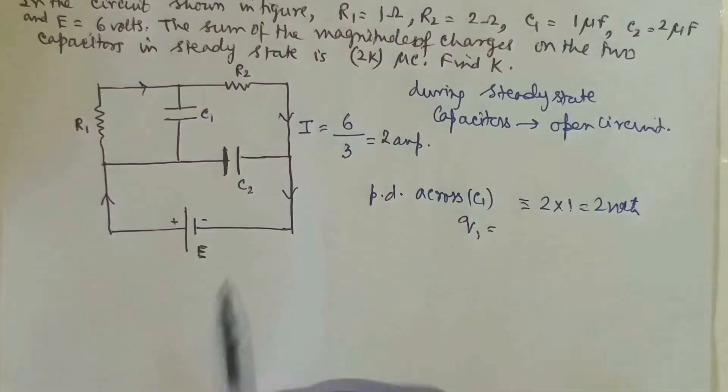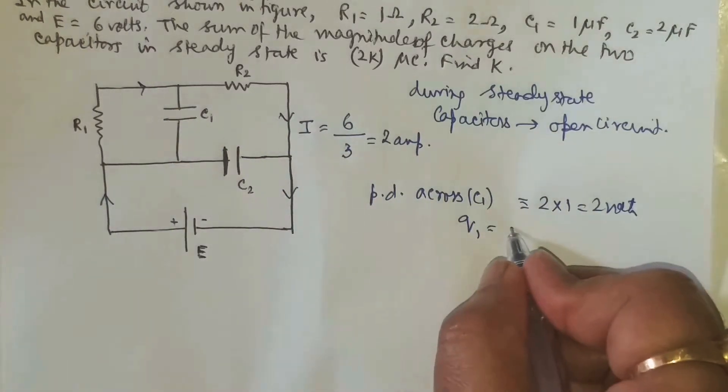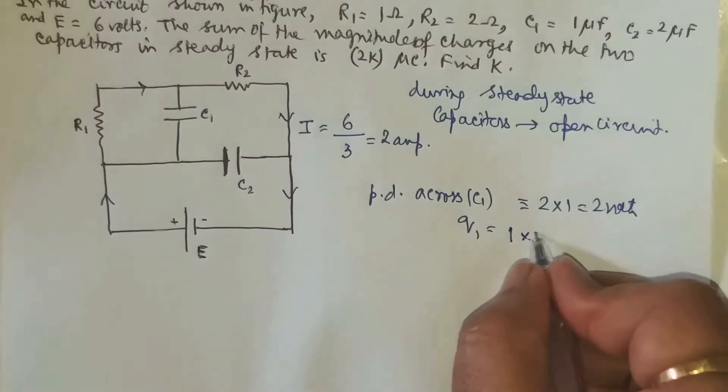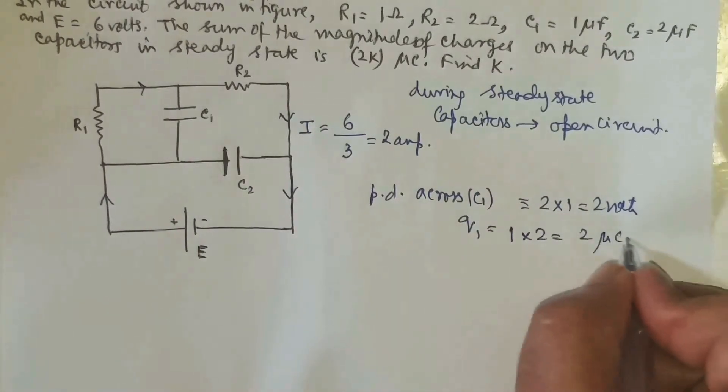So what is the charge on this capacitor? The charge will be CV. So C into V. What is C? C1 they have given as 1 and V is 2 volts. So this is 2 micro coulomb.